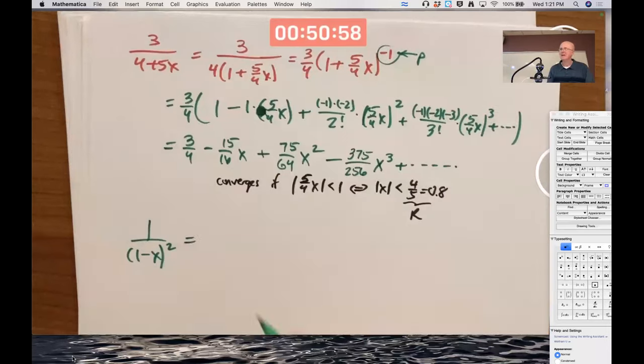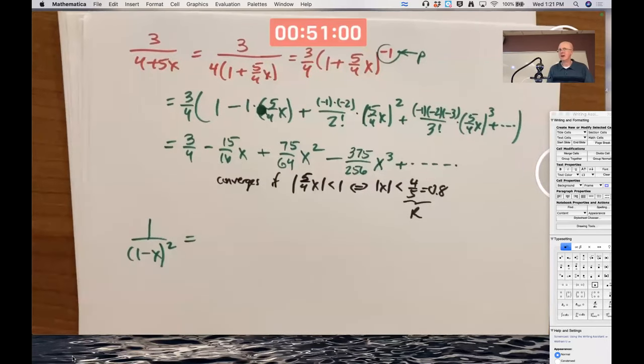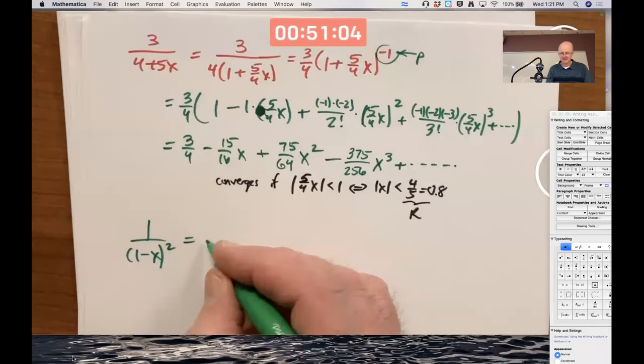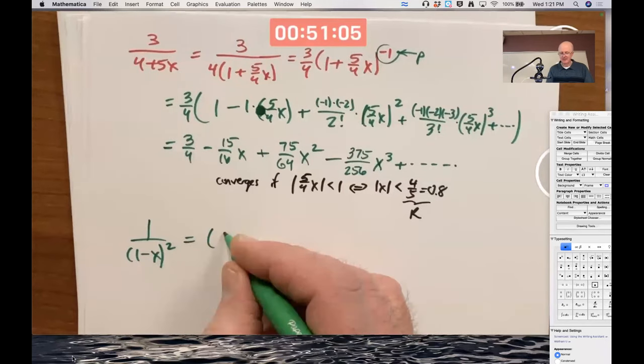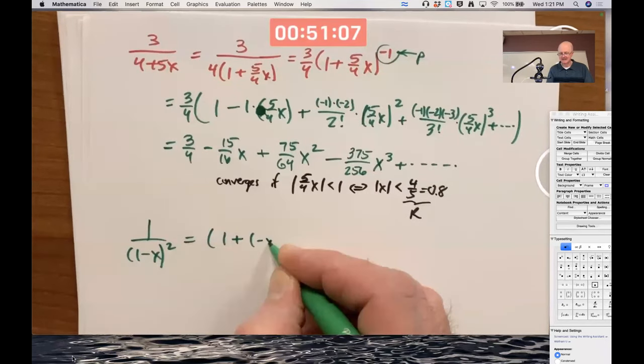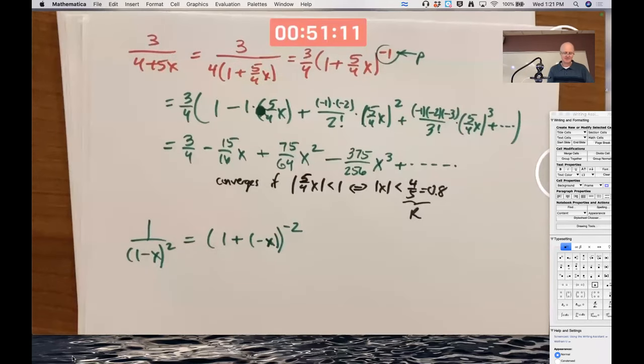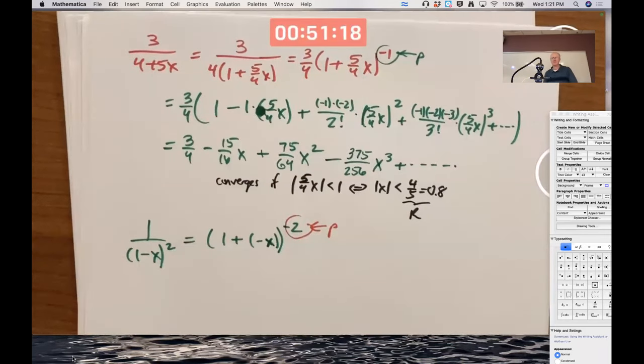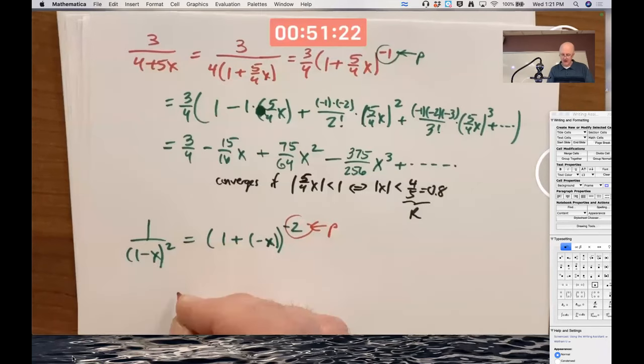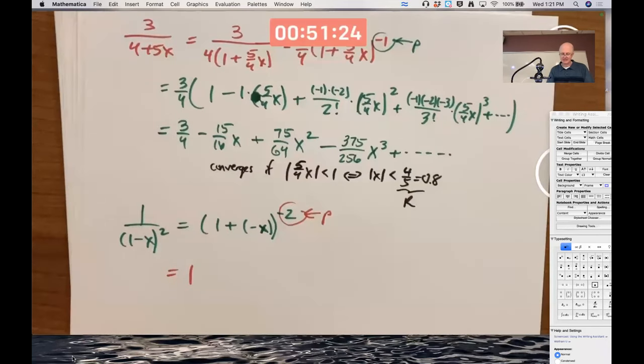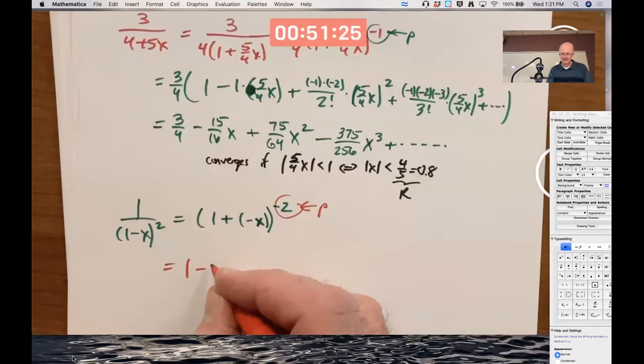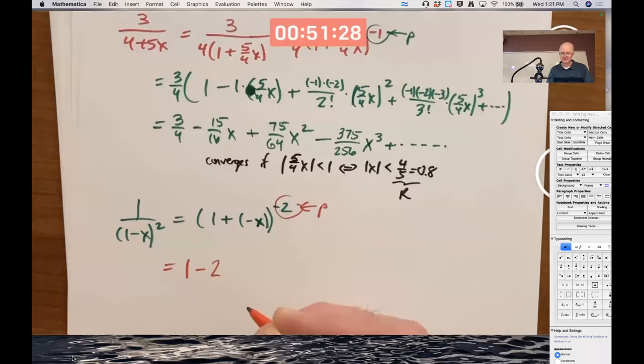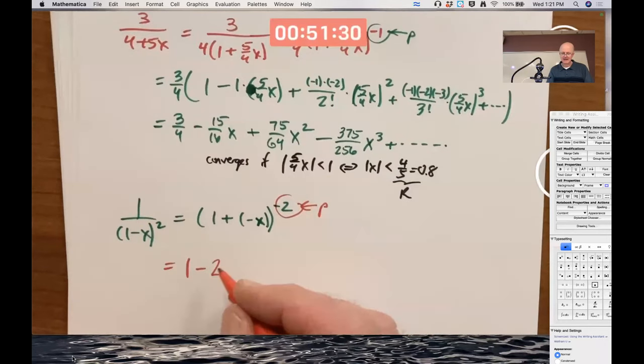First way, use the formula we've just been using in the last 15 minutes. Let's write this as 1 plus negative x to the negative 2 power. The p now is negative 2, and the thing playing the role of x is negative x. So we get 1 plus p times x, negative 2 times negative x.